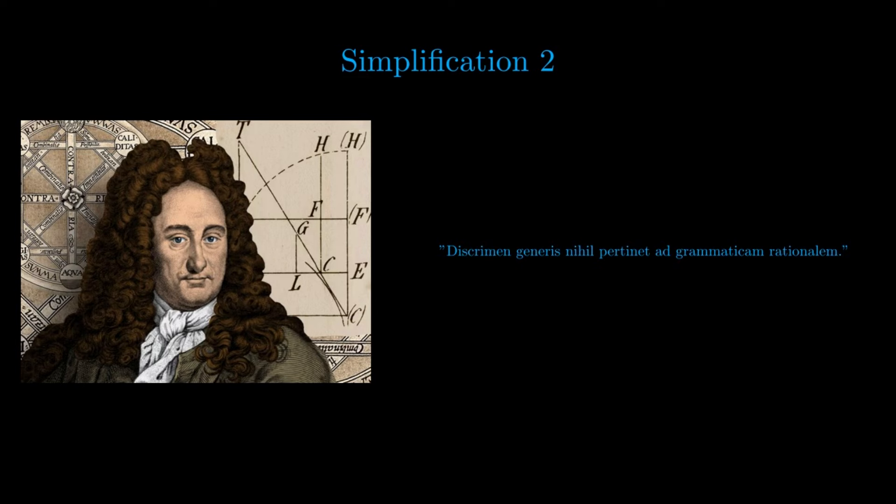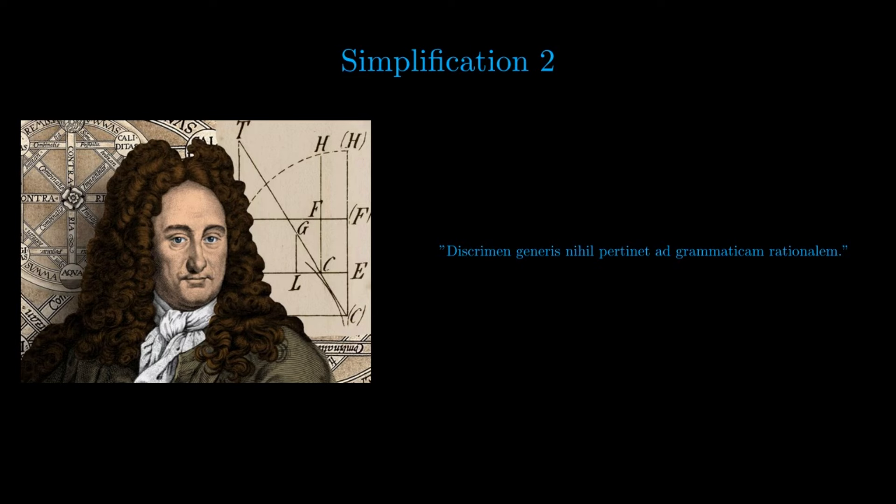The second simplification employed is that of gender. Citing Leibniz: discrimen generis nihil pertinet ad grammaticam rationalem. This means that the difference of genders of nouns is not a rational part of grammar. Peano justifies this reduction by noting that fundamentally there is nothing inherently masculine or feminine about a certain object or idea in most cases. And when there is, a specification can just be made without altering the noun, but just adding some further information.